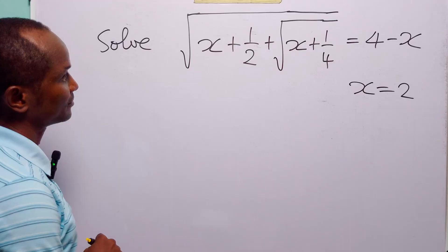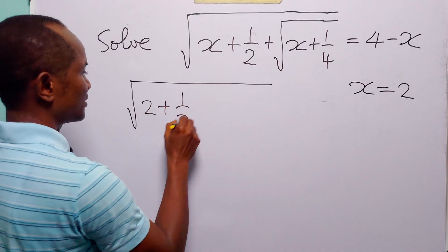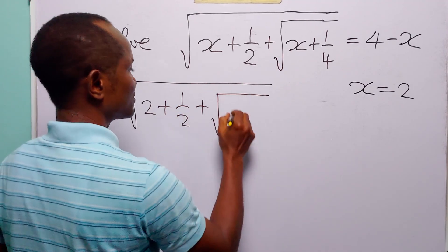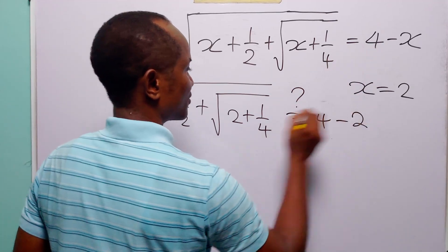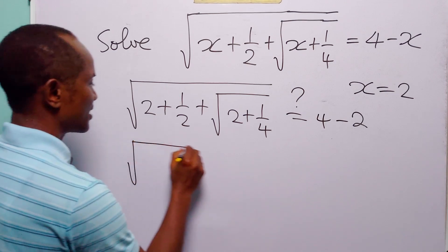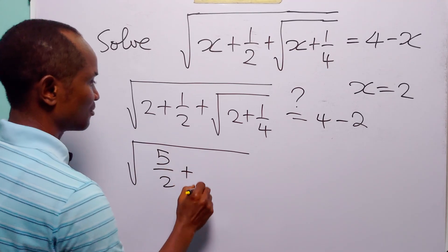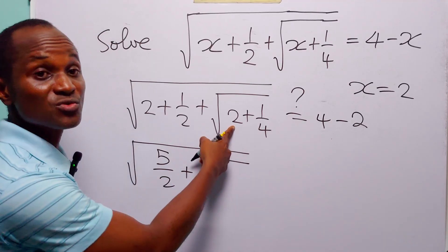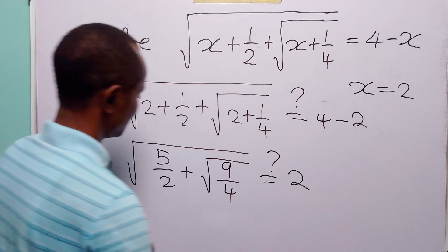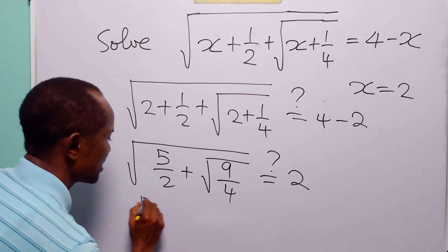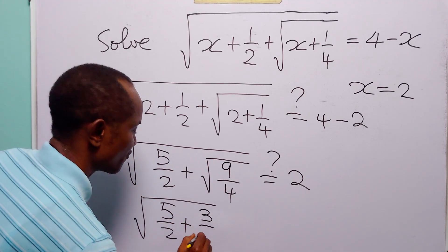Now let us check our answer. When we substitute x equal to 2 into the original equation we have: the square root of 2 plus 2 plus 1/2 plus the square root of 2 plus 1/4. Is this equal to 4 minus 2? Here we have the square root of (2×2 = 4, plus 1) = 5/2, plus the square root of (4×2 = 8, plus 1) = 9/4. Is this equal to 2?